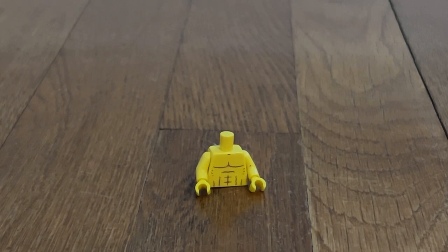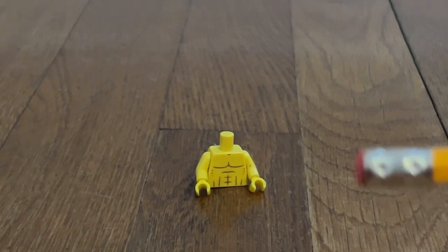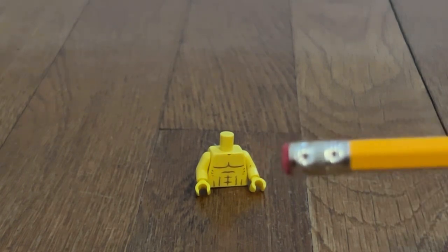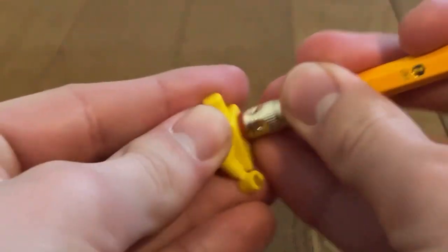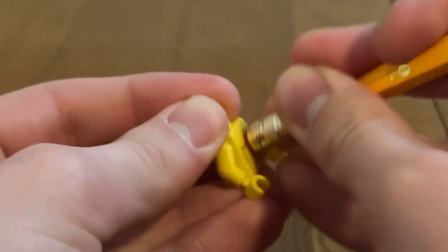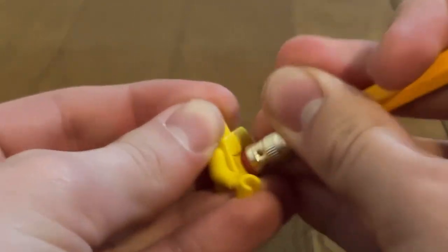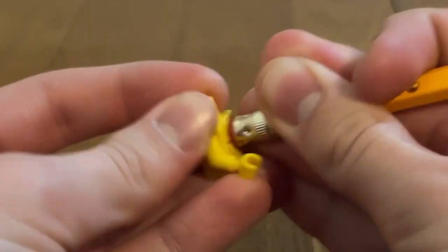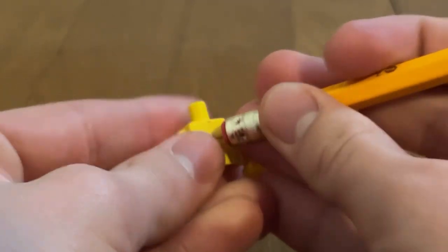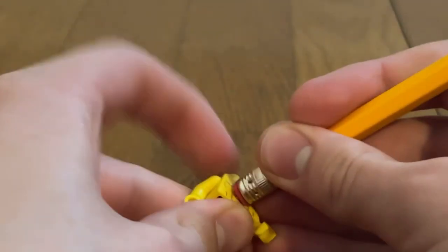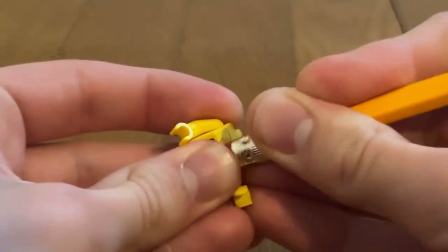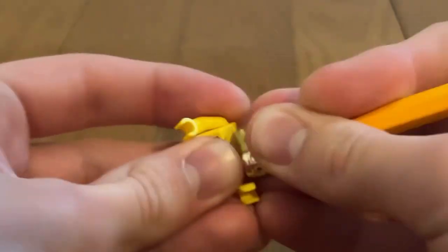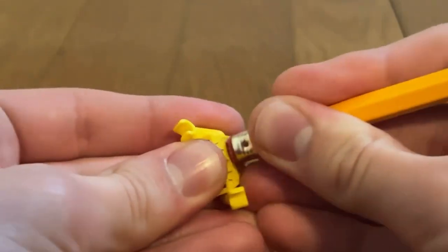So to do that, you're going to need a pencil with a very decent eraser. You're going to erase the printing on the side that has the printing on it. And you're going to have to push down really hard while you're getting rid of the printing. So this is going to require strength.